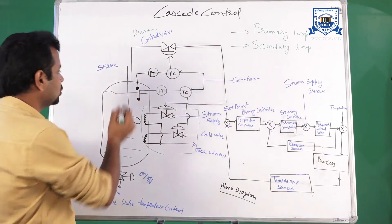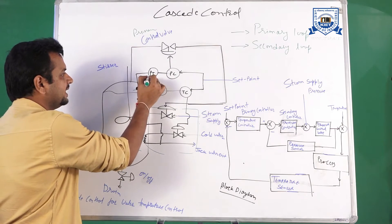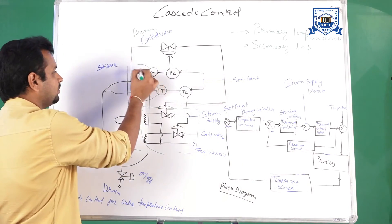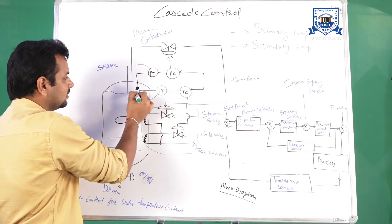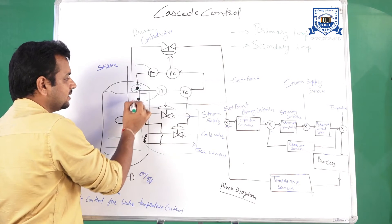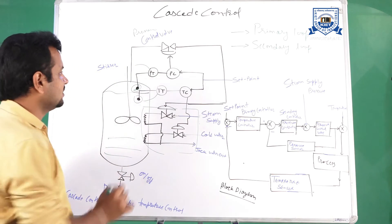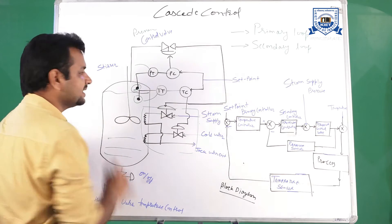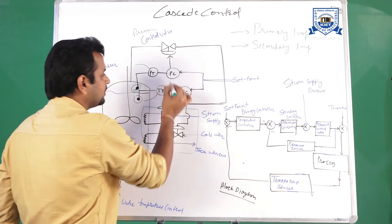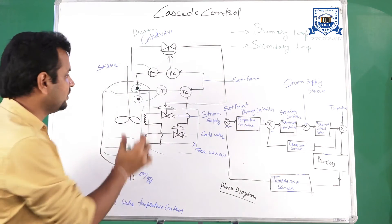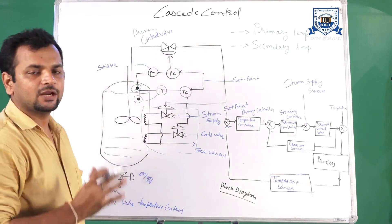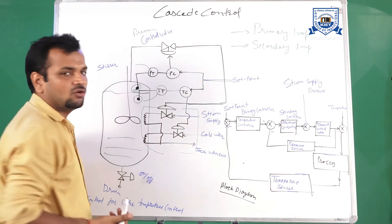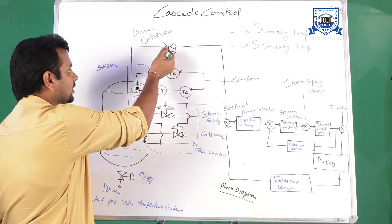Two sensors are used: PT is the pressure transmitter and TT is the temperature transmitter. The pressure transmitter measures the pressure from its sensor, and the temperature transmitter measures the temperature from its sensor. Once we know the current values of pressure and temperature, we compare them with the set point values for both pressure and temperature. Based on that comparison, we do the opening and closing of the valves — for temperature, the steam supply and cold water valves are used, and for pressure, the pressure valve is used.